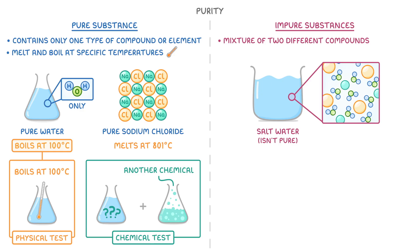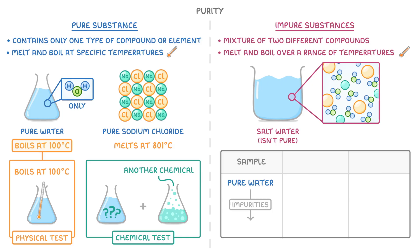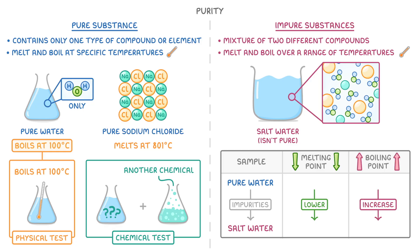On the other hand, impure substances, like our salt water, don't have specific melting and boiling points. Instead, they melt and boil over a range of temperatures, depending on how much of each substance there is in the mixture. In general, having impurities in your samples — for example salt in your water — will lower the melting point but increase the boiling point.